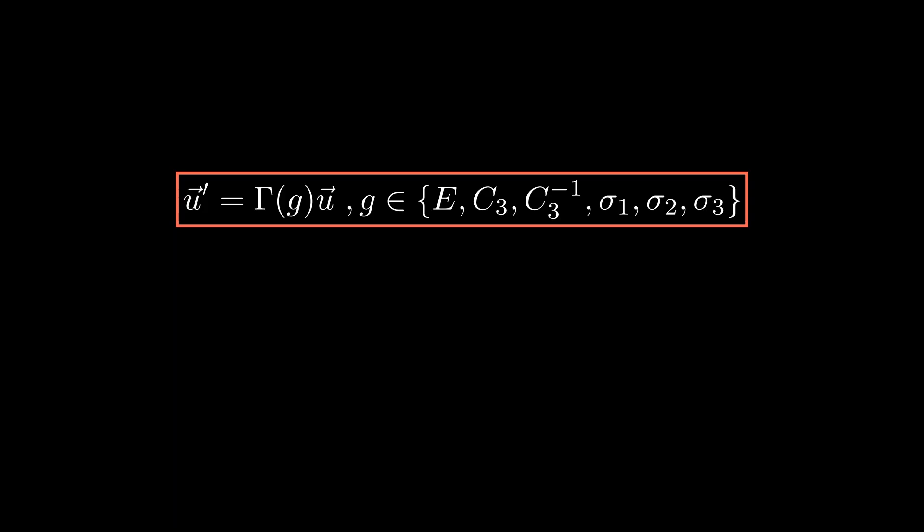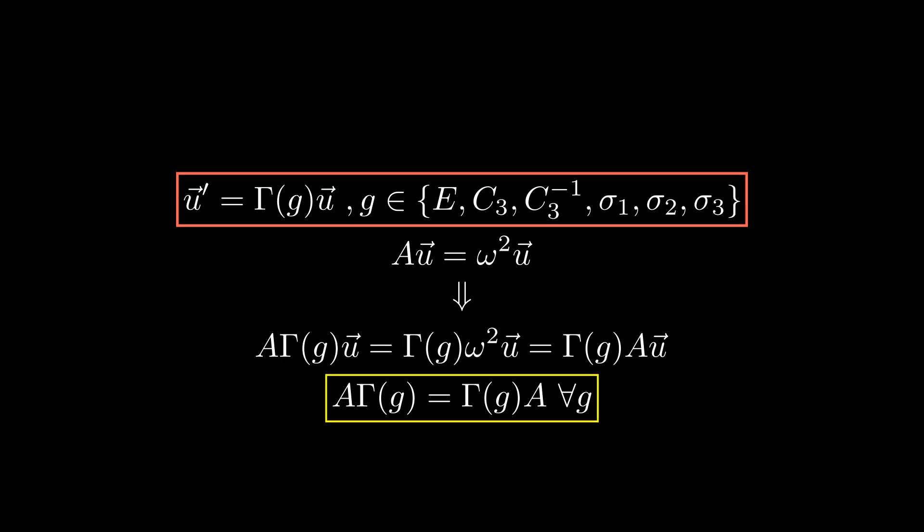Starting from our eigenvalue problem, invariance means that if u is an eigenvector of A with eigenvalue omega squared, then also should be u prime. Therefore, A u prime is equal to omega squared u prime. If we now use the definition of u prime and insert that omega squared u is equal to A u by the definition of the problem, we get a simple relation for our matrices. Take now a step back and look at how a few symmetric considerations have helped finding six relations for our A matrix.